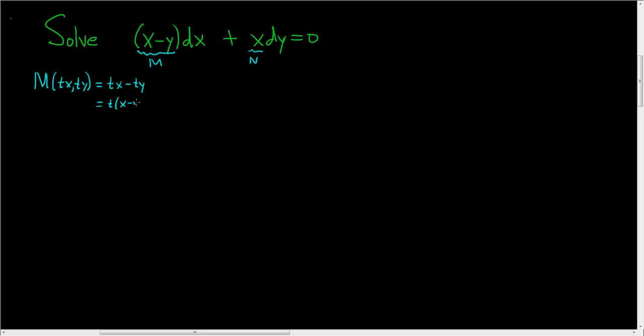And we said that x minus y was big M, so this is T times M of xy. So big M is homogeneous of degree 1.